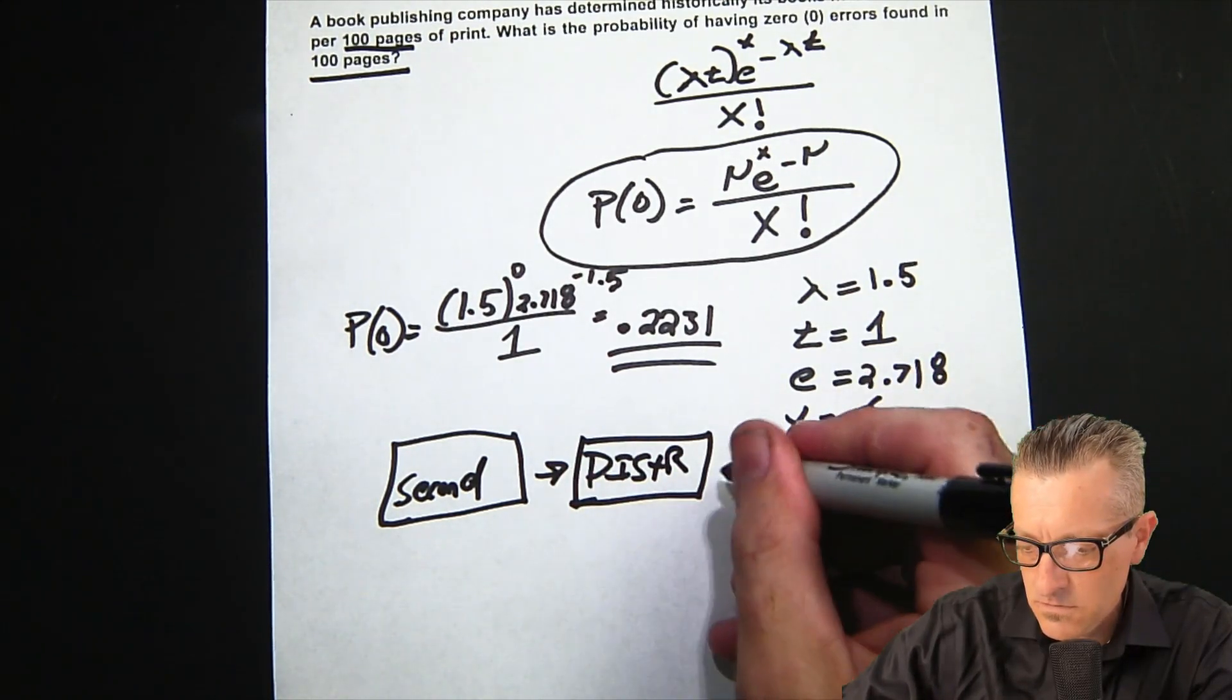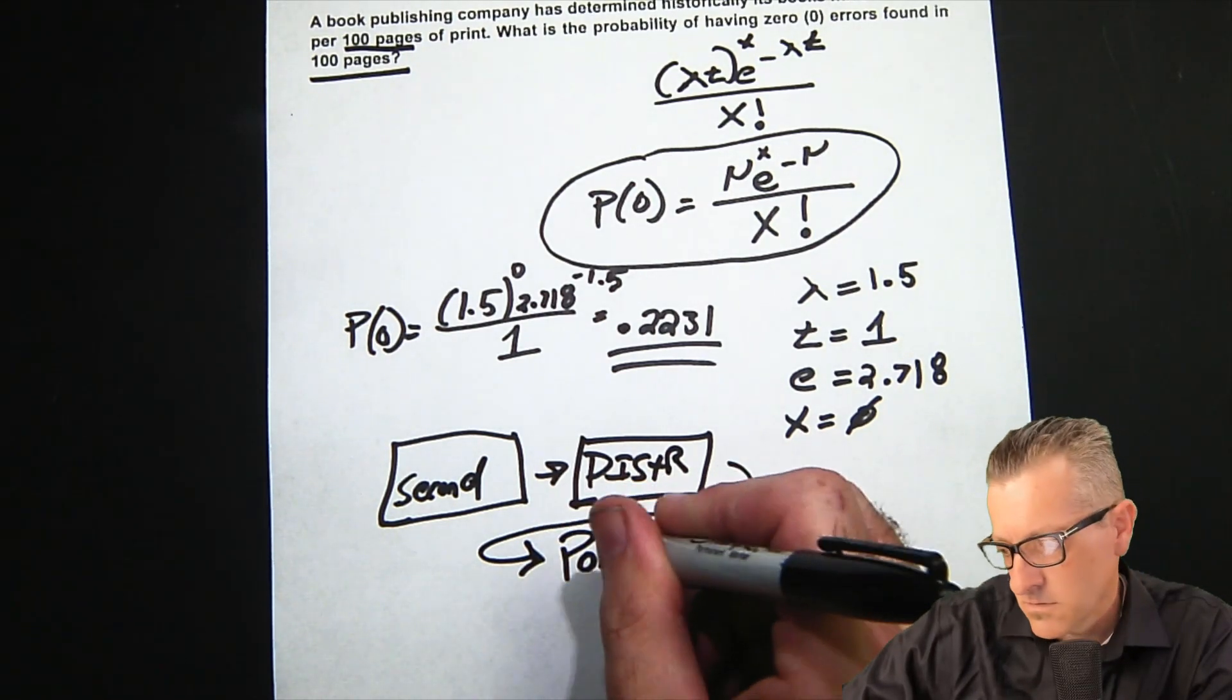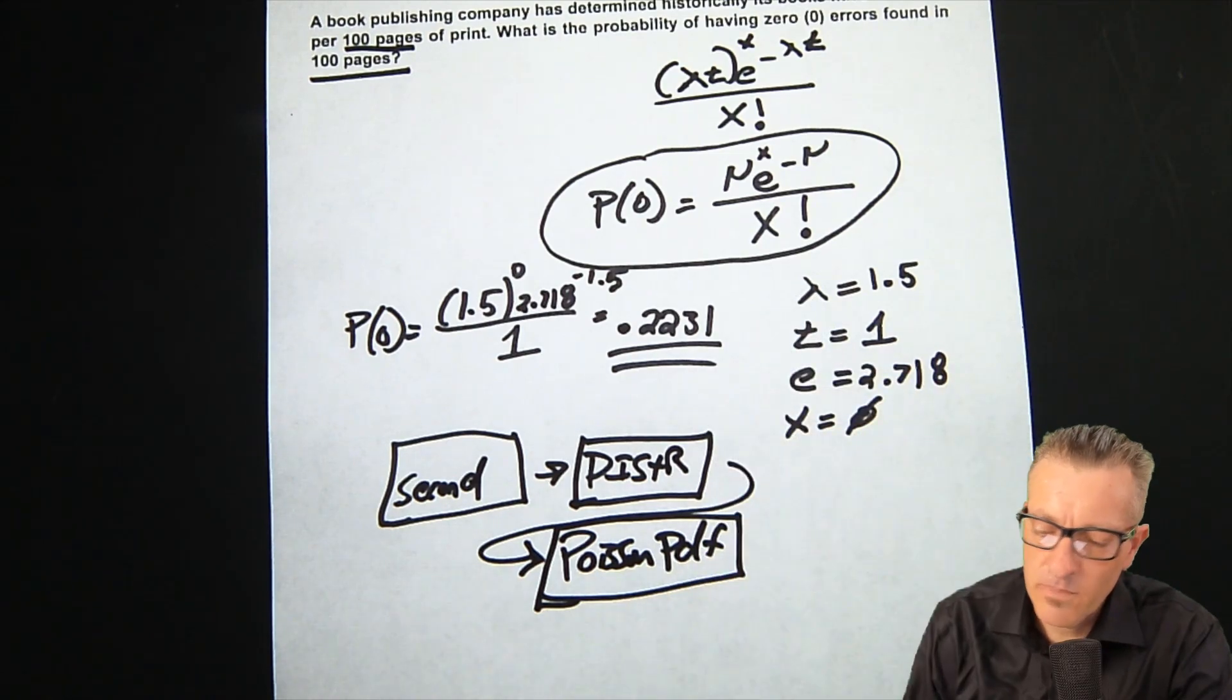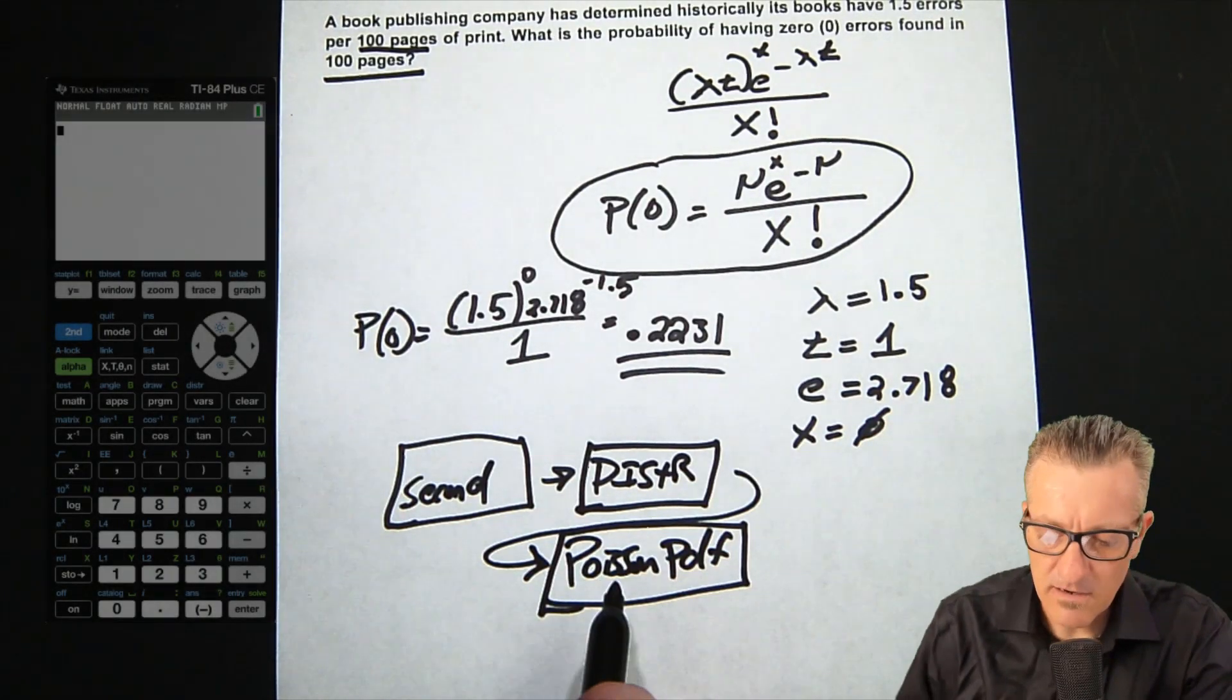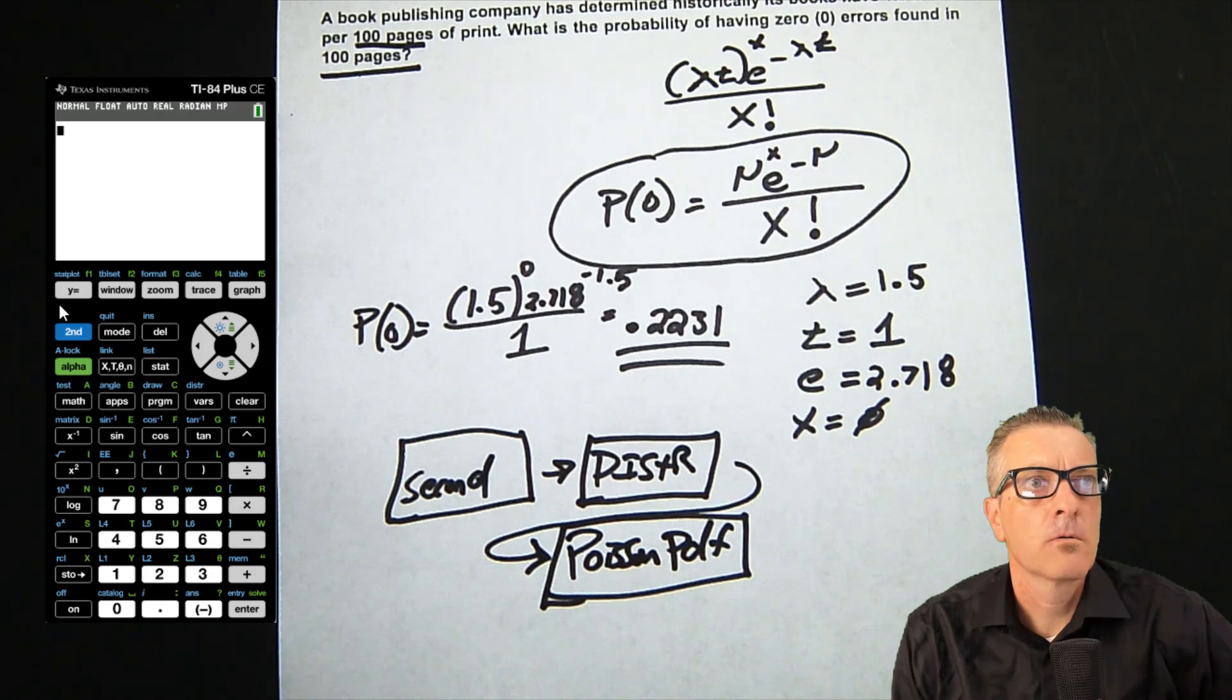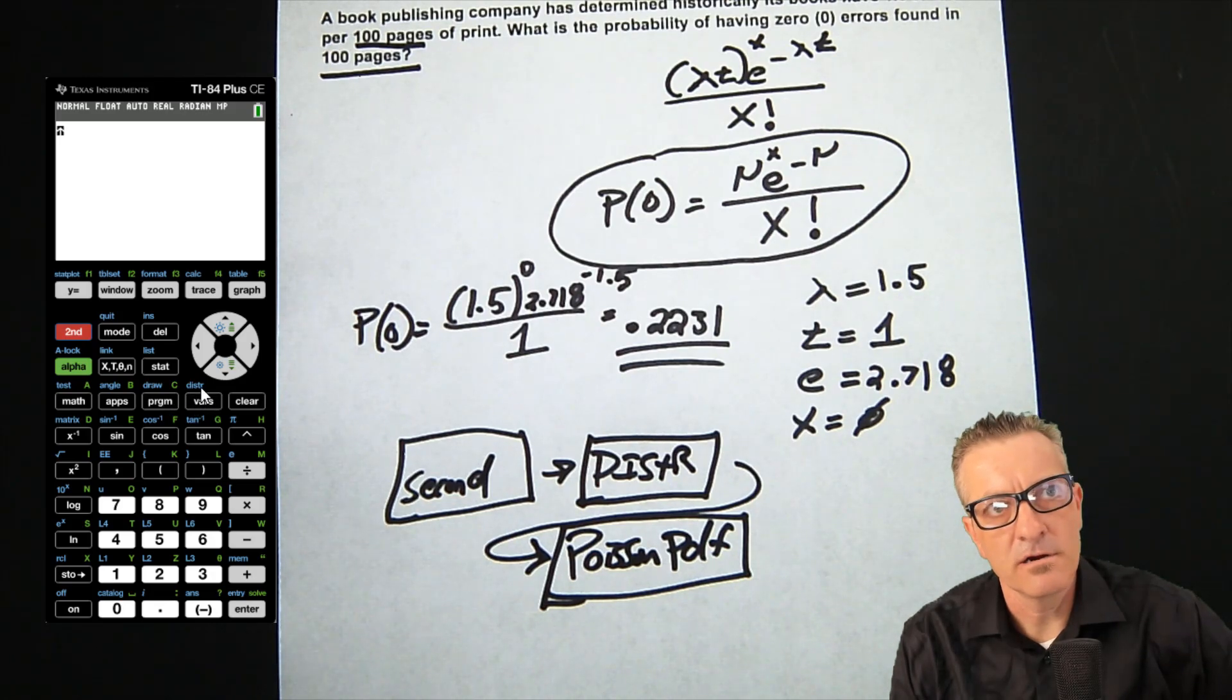You push in second, and then it's DISTR, which is for distributions. Then we go to Poisson PDF. It's PDF because we're looking for a specific value. I'll pick up on the calculator. On my calculator, we do second and then DISTR right here.